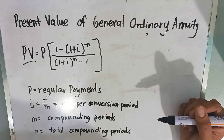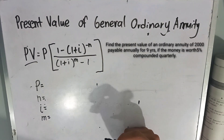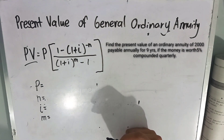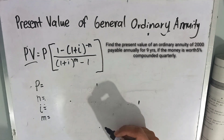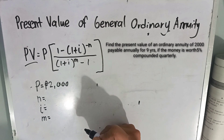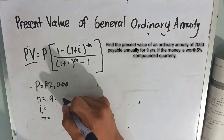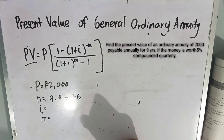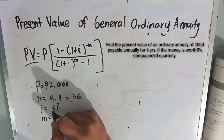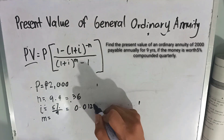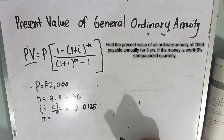N stands for the total compounding periods. Now let's have an example: find the present value of an ordinary annuity of 2,000 payable annually for nine years if money is worth five percent compounded quarterly. Our principal is 2,000 pesos, our total compounding periods N is nine times four equals 36, and our rate per compounding period I is five percent divided by four equals 0.0125.